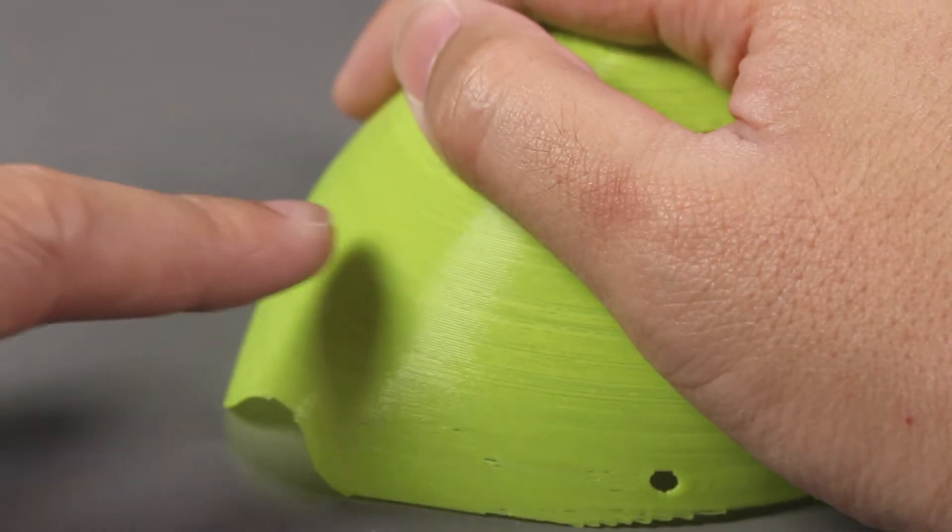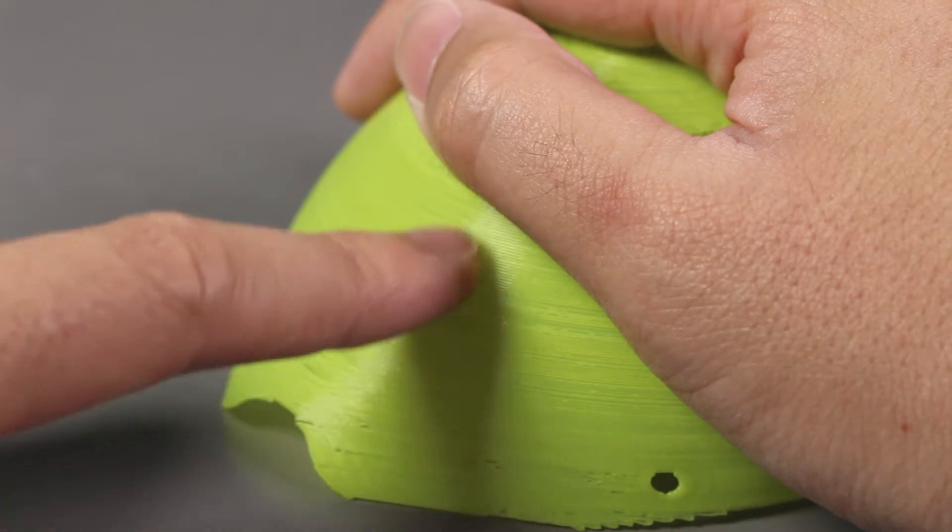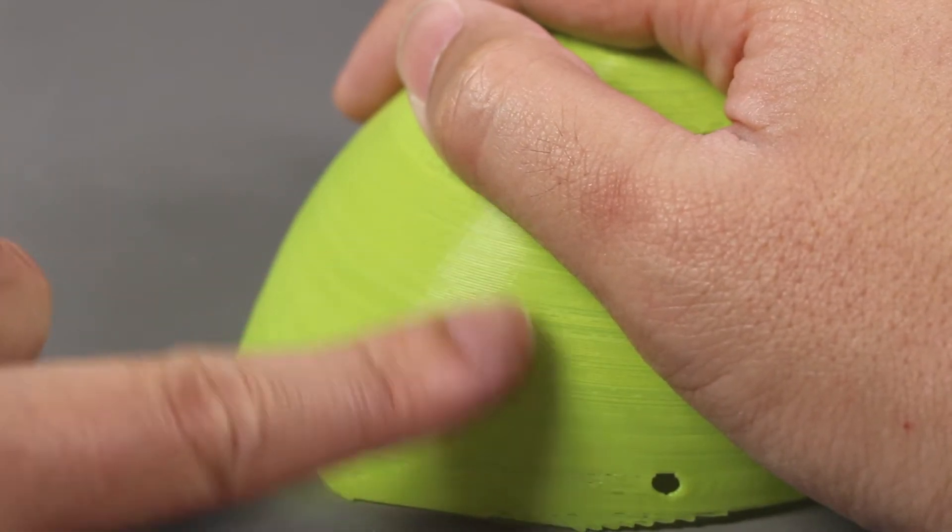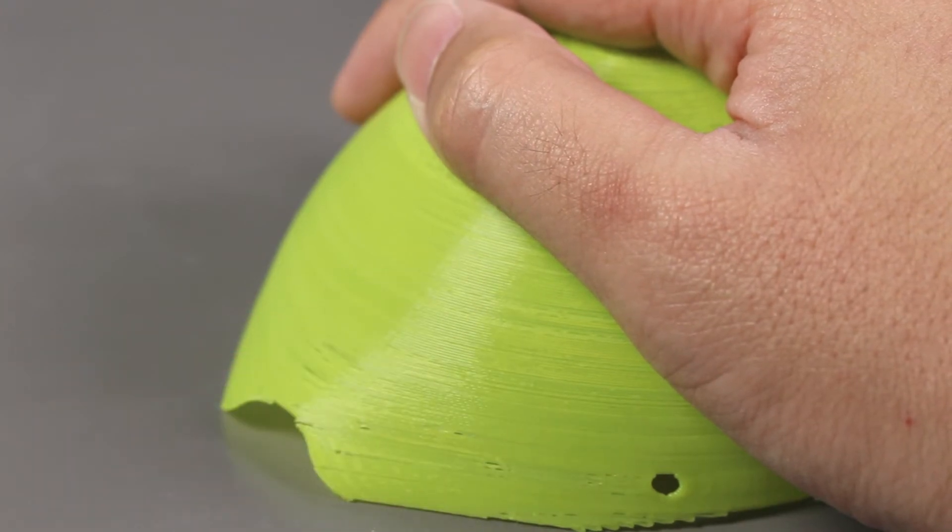See, here we can see the layers building upon layers, so there will be these ledges or ridges in between, making the print not very smooth to the touch.